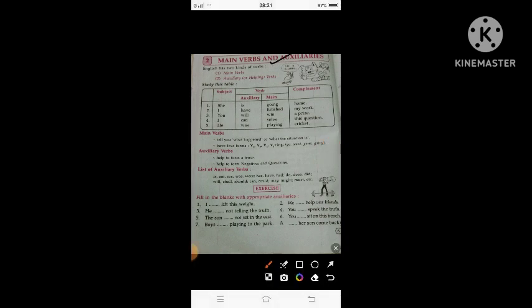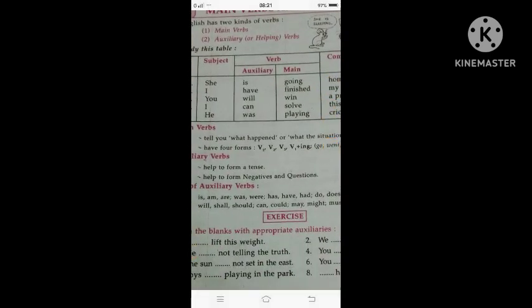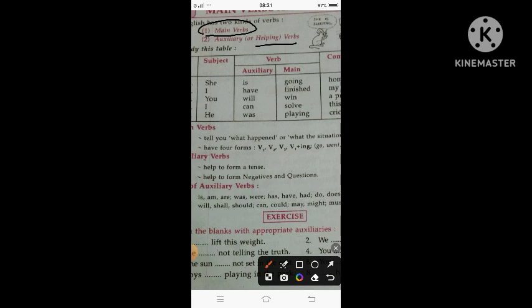English has two kinds of verbs: main verbs and auxiliary verbs. Main verbs are the primary action words, while auxiliary or helping verbs come beside them to help complete the meaning.